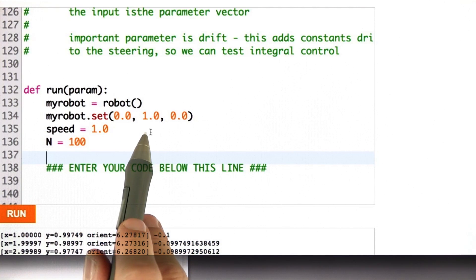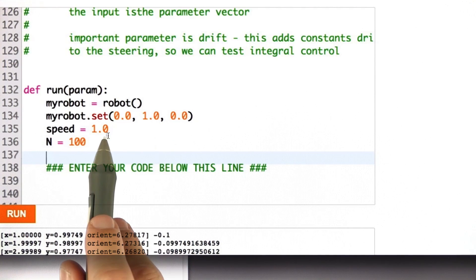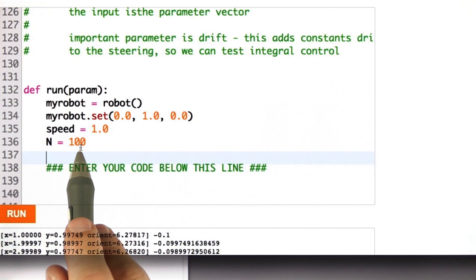The robot has an initial position of 0, 1 and 0, a speed of 1, and I wanted to simulate it for 100 steps.